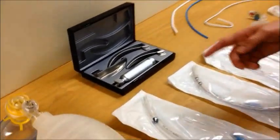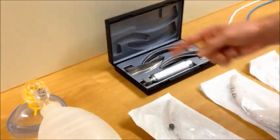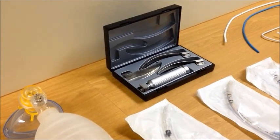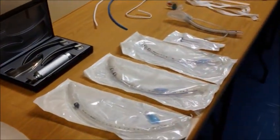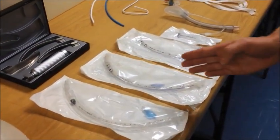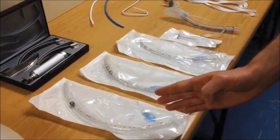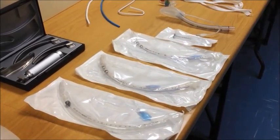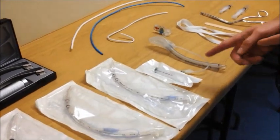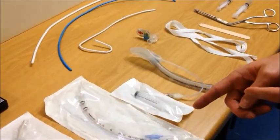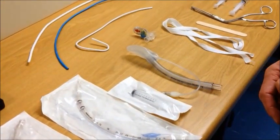You should have a laryngoscope with a selection of blades checked and in good working order and you should have a selection of sizes of endotracheal tubes. We suggest the size you're going to use and one size above and one size below in size. You should have a 10mm syringe to inflate the pilot cuff and the cuff of the ET tube.